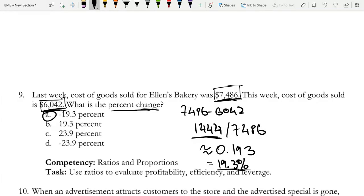And just to show you, in this case, you would actually do 6,042 minus 7,486. And then you get negative 1,444 and then divide it. And then you get the negative result. I just wanted to use the deviation instead of the difference.